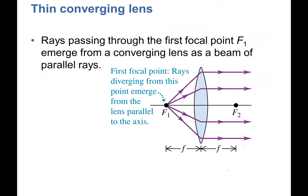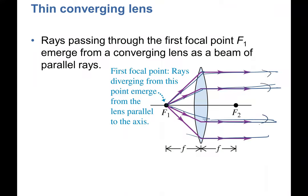If you put the object at focal point F1, the refracted rays emerge parallel to the axis and never converge, meaning the image is at infinity — no image is formed. This is analogous to placing an object at the focal point of a concave mirror.